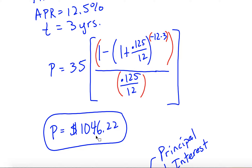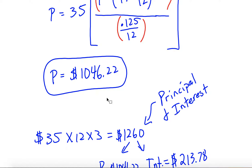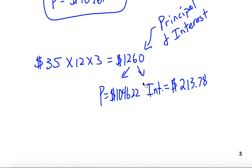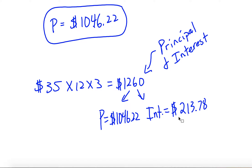You find out your present value is $1,046.22 — that's how much you took the loan out for, though probably not exactly that amount in practice. To find out how much you paid in interest, take your $35 monthly payment times 12 months times 3 years — that's the total you paid including principal and interest. Subtract off the principal of $1,046.22 and you find you paid $213.78 in interest over those 3 years.